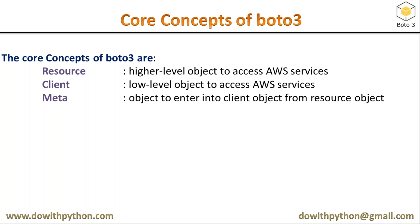The next concept is meta. We discussed that resource may not have all operations for every AWS service. When you start your code with resource and find that some operation is missing, you don't need to create a new client directly. Instead, you can use the meta object within your resource to enter into the client object. Simply put, meta is used to transition from a resource object into a client object.